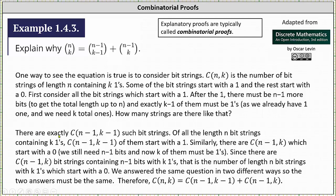Well, there are exactly N minus one choose K minus one such bit strings. Of all the length N bit strings containing K ones, N minus one choose K minus one of them start with a one.